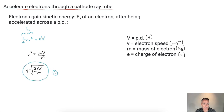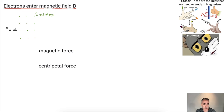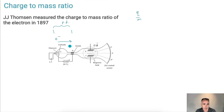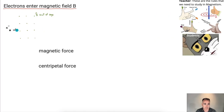Now let's continue. After the electrons have been accelerated, they enter a region of magnetic field. So we have area one — the acceleration region — and area two, the magnetic field region. These electrons that have been accelerated now enter a place of magnetic field.